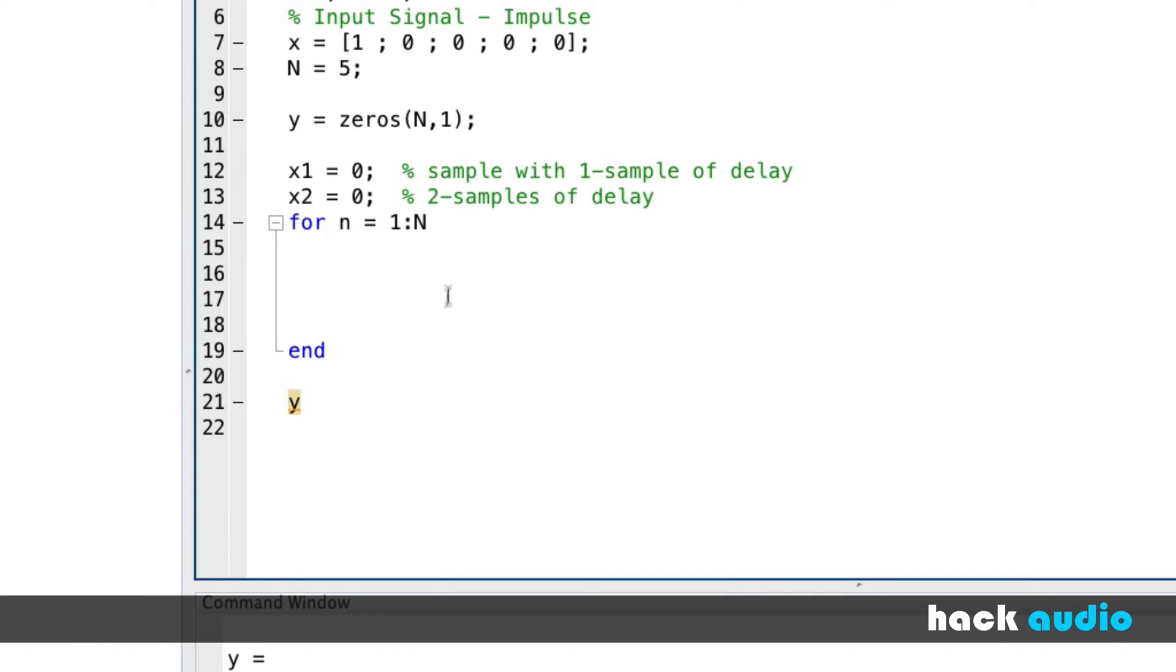So what we need to do is look at in our loop how we can end up using this. Because in our output, that's going to be Y(n,1) equal to... Here's where we have X(n,1). That represents our dry signal. And then what we're going to add to it is minus 1 multiplied by X2. So we're going to assume, when we go to use it here, that this one already has two samples of delay.